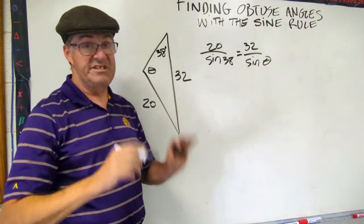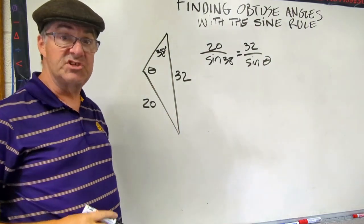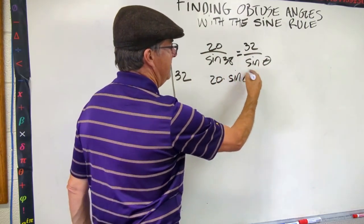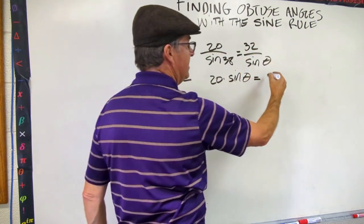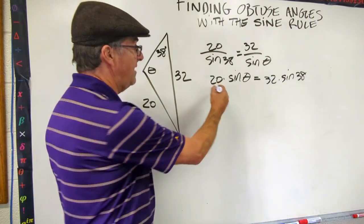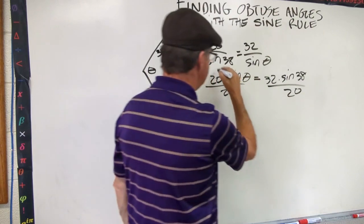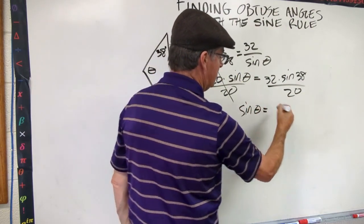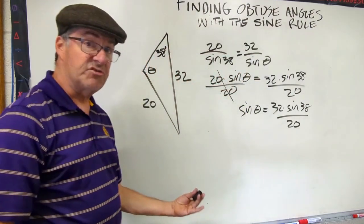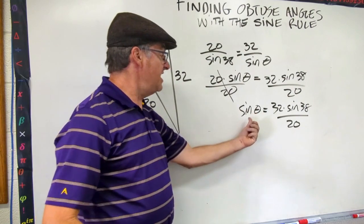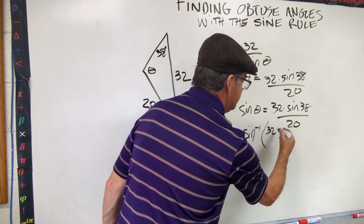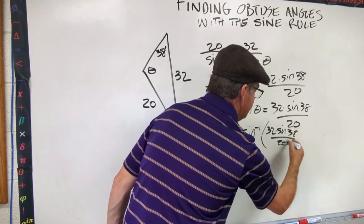Now, the most thorough, easiest to keep straight way of dealing with two fractions equal to each other is to first cross multiply. So I'm going to multiply 20 times sine theta, so I get 20 times sine theta, and then I bring down my equals, and then I cross multiply this way equals 32 times sine 38. Now I need to get sine theta alone so I'm just going to divide both sides by 20. These cancel and I get sine theta equals 32 times sine 38 over 20.